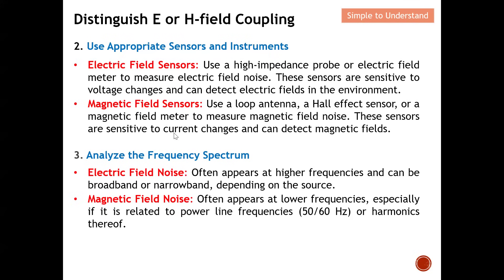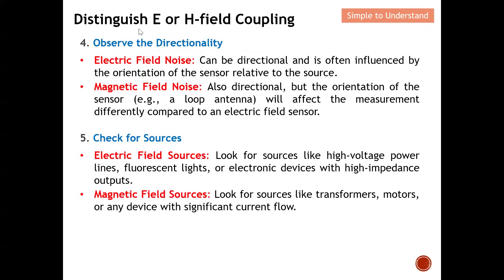We can also analyze the frequency spectrum to distinguish the coupling type. Electric field noise typically occurs at higher frequencies and can be either broadband or narrowband depending on the noise source. Magnetic field noise typically occurs at lower frequencies, especially power-line-related frequencies such as 50 or 60 Hz and their harmonics — for example, 100 Hz, 150 Hz, etc.